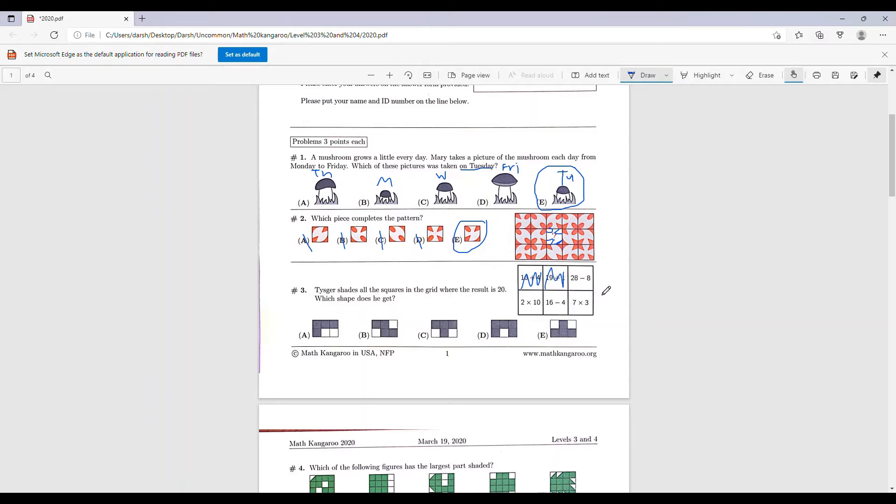28 minus 8 is also 20, we can shade this. 2 times 10 is also 20, we can shade this. 16 minus 4 is not 20, it's 12, so we're not going to shade this one. And 7 times 3 is also not 20, it's 21, so we're not going to shade that. If we look which one has all of these shaded, we can see A does. So that's our answer.